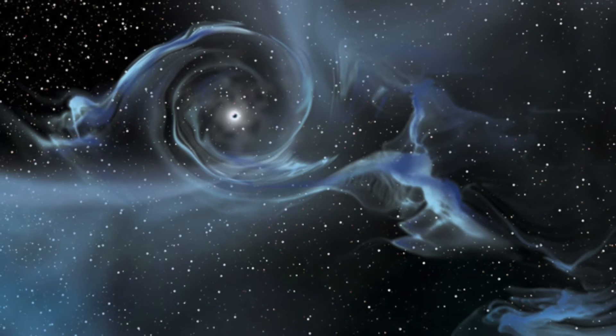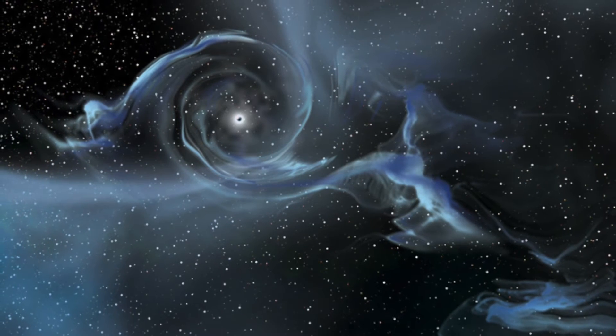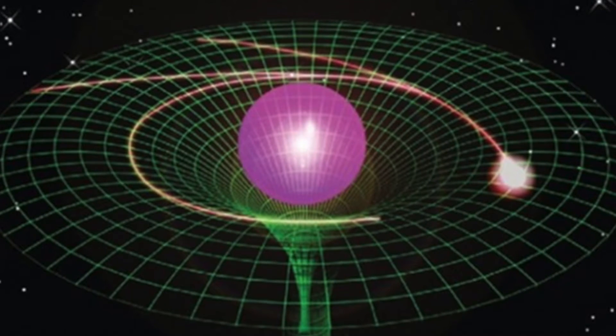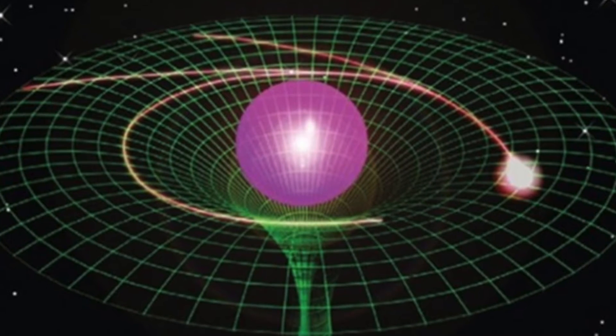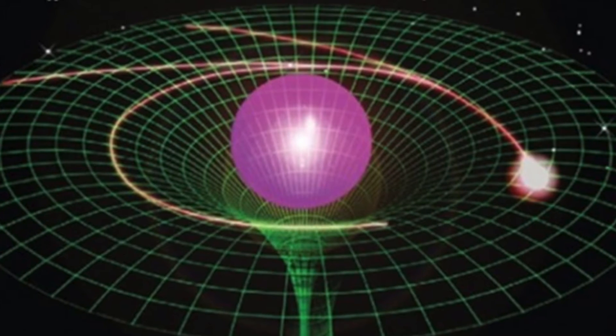This is partly true, but actually calculations show that no one is really sure what happens in the later stages of black hole evaporation. Some researchers think that a tiny stable remnant is left behind.